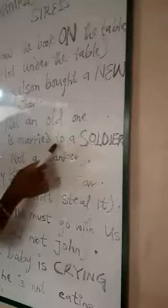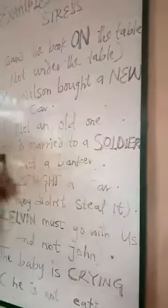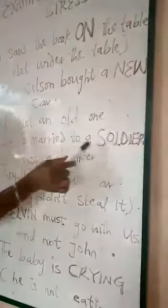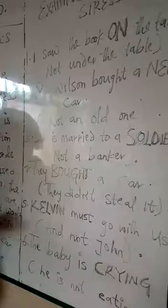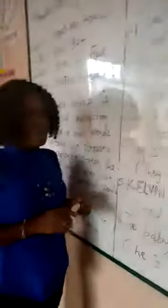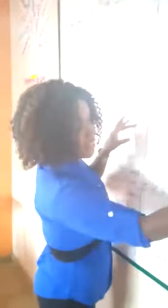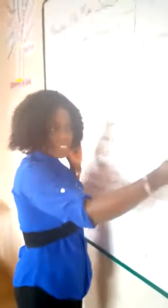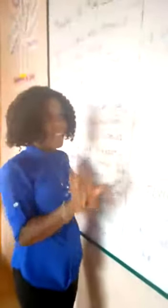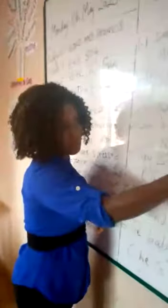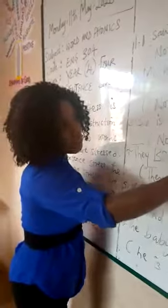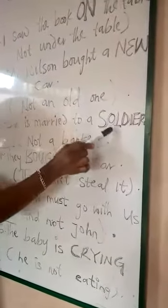Number three says: she is married to a soldier. She is not married to a teacher. Neither is she married to a banker. Rather, she is married to a soldier. And if you look at this grammatical construction, you will discover that the word that is stressed there is 'soldier.' This is where the stress lies.